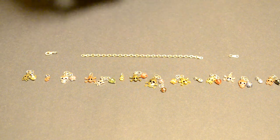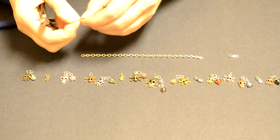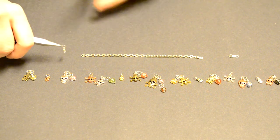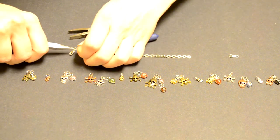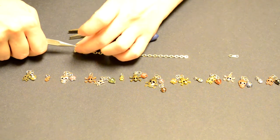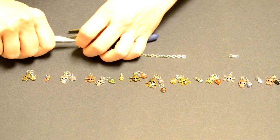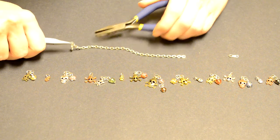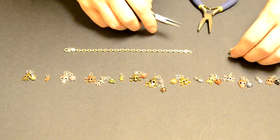First, I'm going to put my clasp on each end. You do that by opening your jump ring towards and away from yourself. Slide that end onto the open jump ring, then close it the opposite of what you did. We're going to do the same thing on the other end.